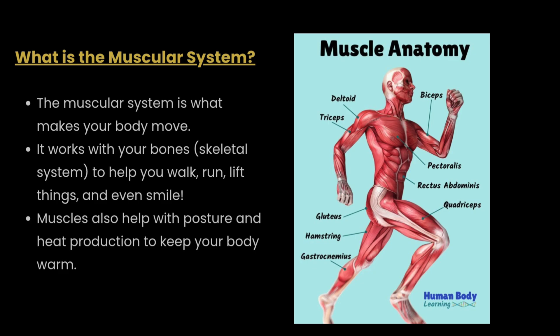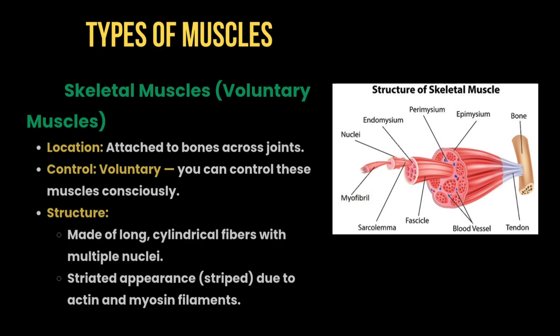The muscular system is what makes our body move. It works with our skeletal system to help us walk, run, lift things, and even smile. Muscles also help with posture and heat production to keep our body warm. Start with the definition, then move to the types of muscles.